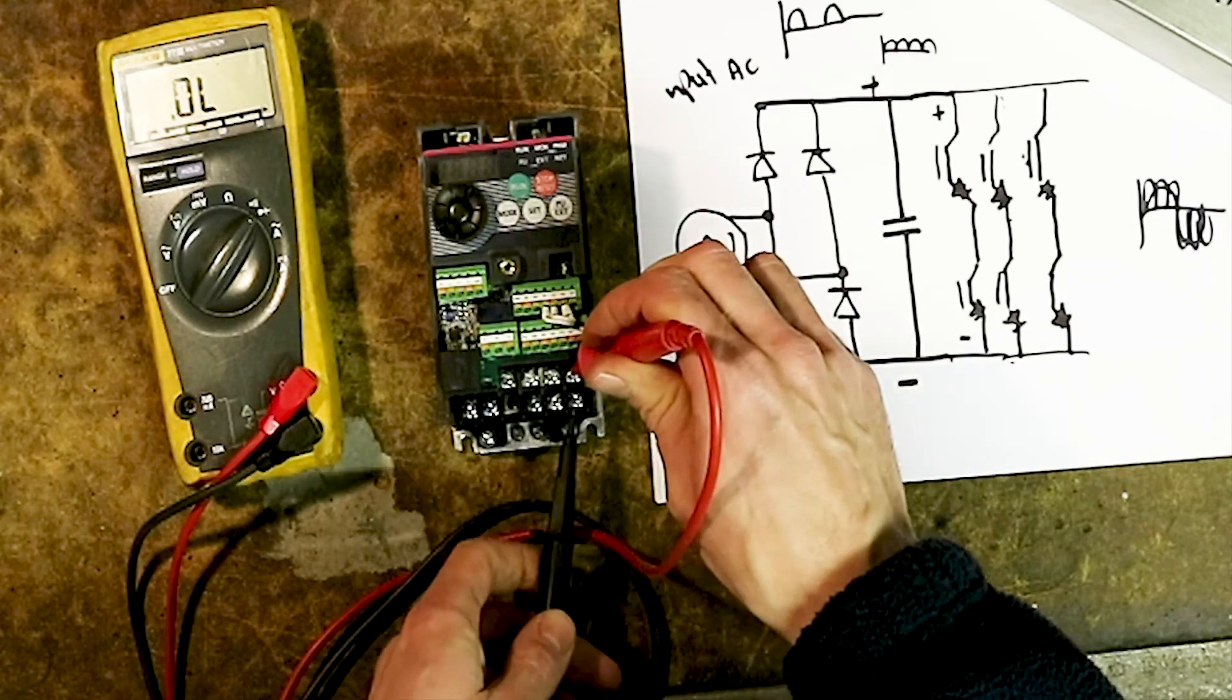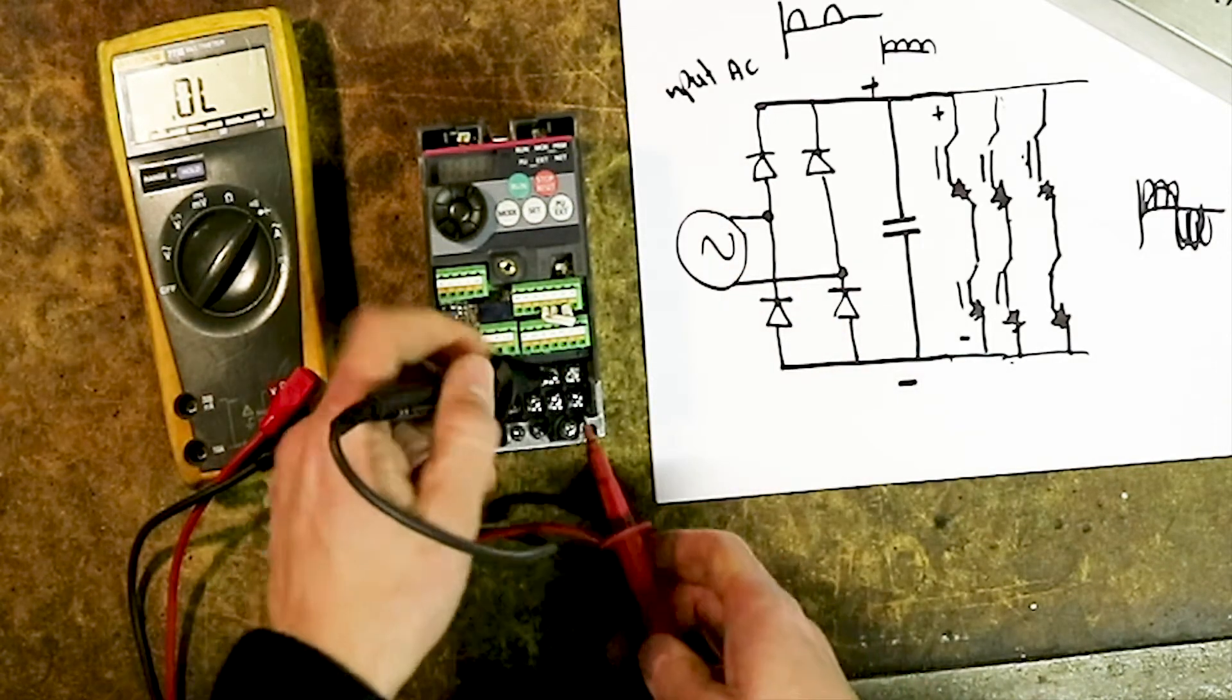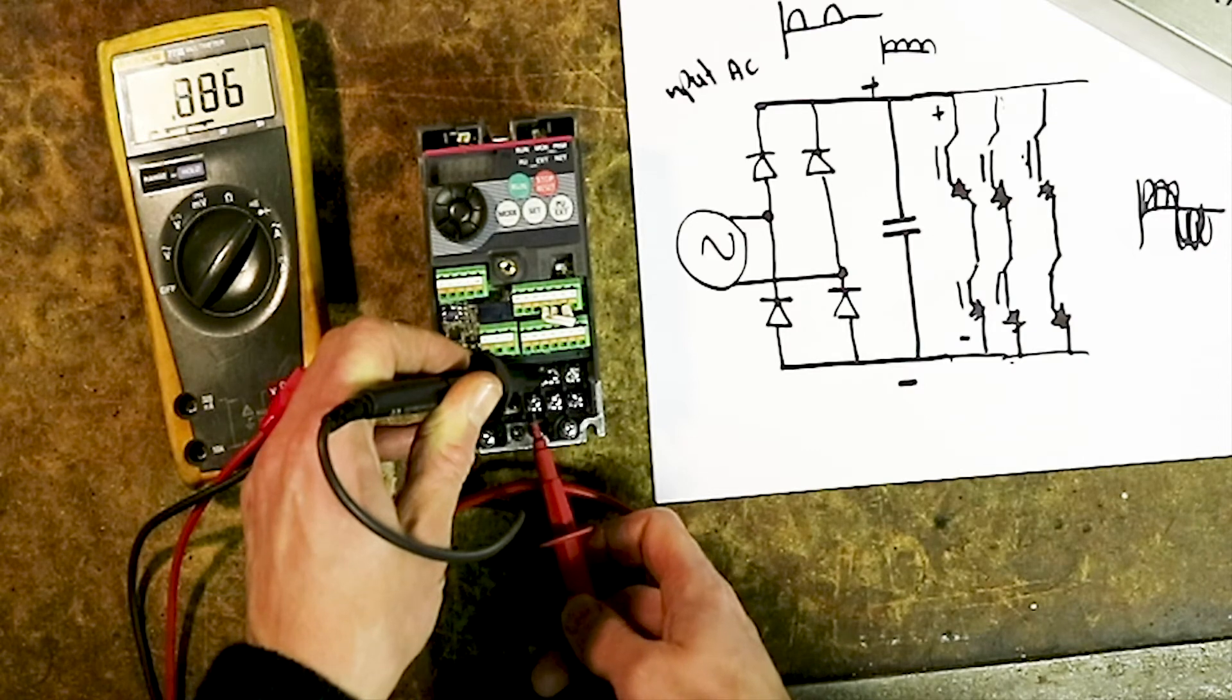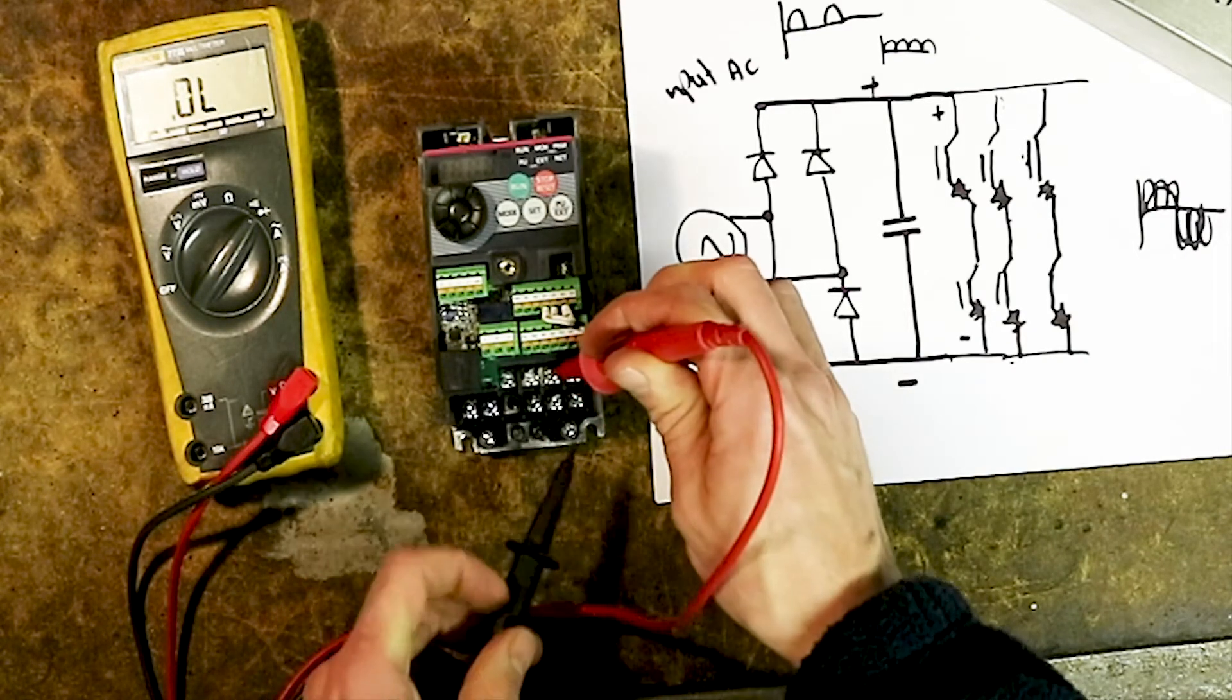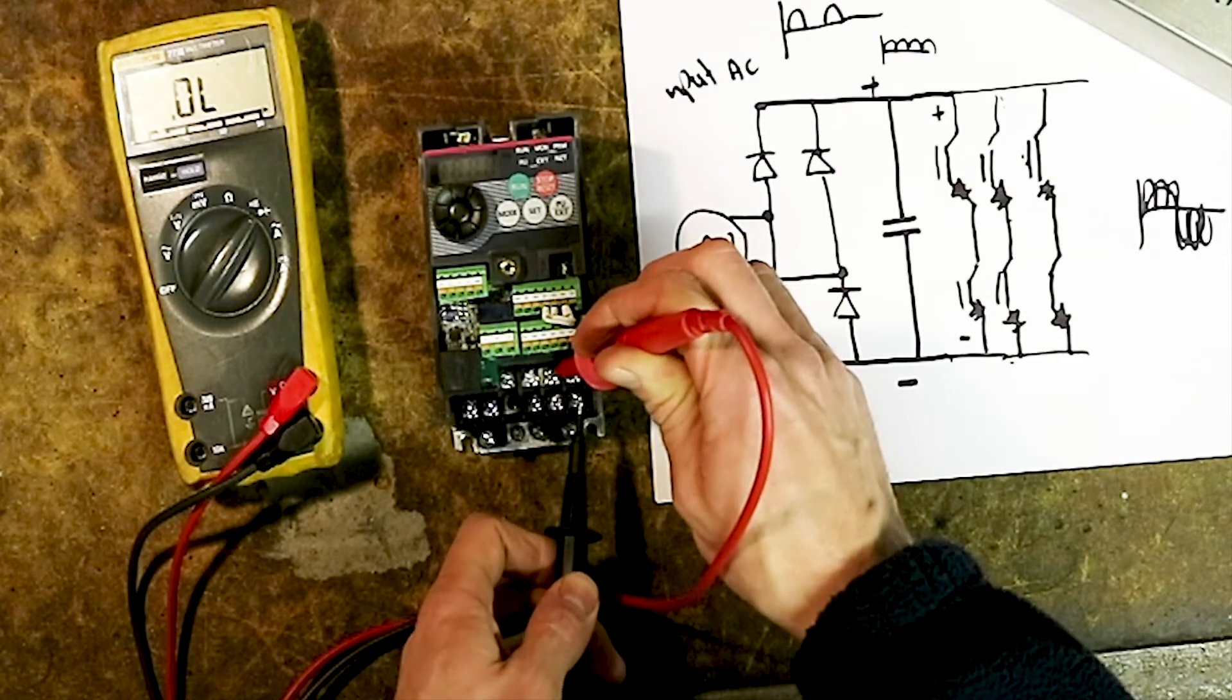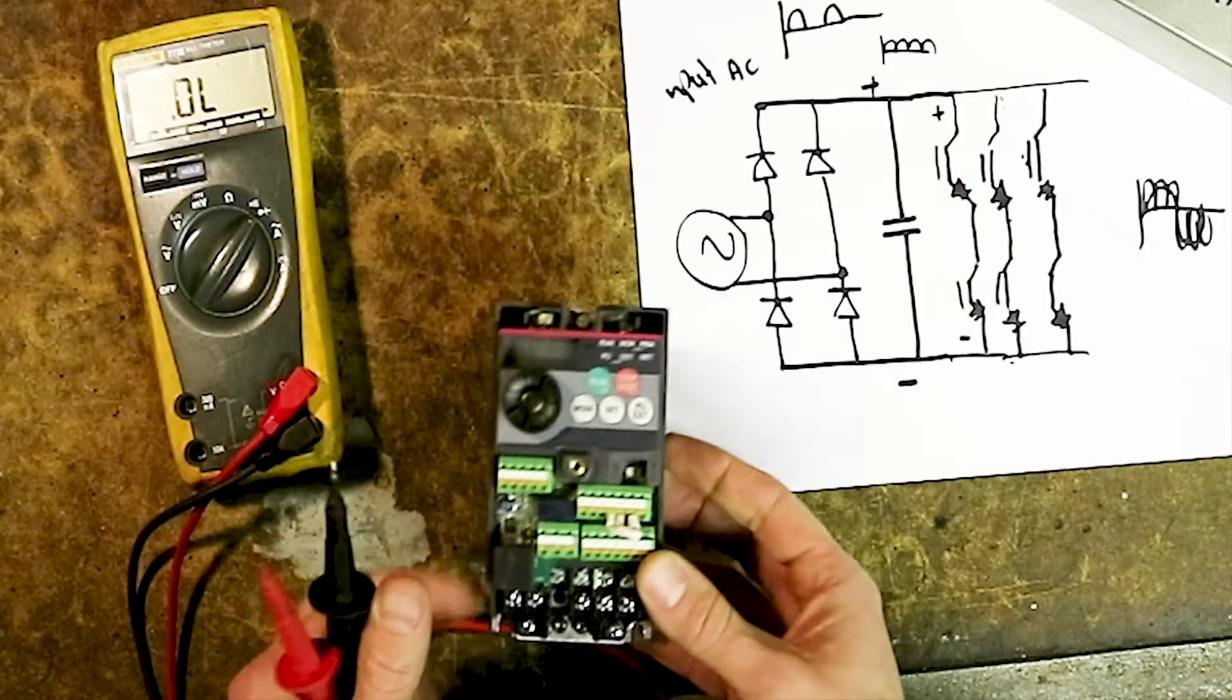Let's check the other side to make sure there's no shorts and we're not getting a reading on the reverse. We shouldn't get a reading on this side - no. Okay, so that checks out. I have got a broken one here.